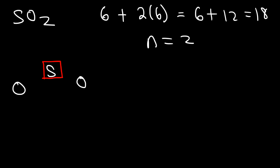I'm going to put one lone pair on sulfur. Now we need to add at least eight electrons around the sulfur atom. Some atoms may have an expanded octet and may have more than eight, but try to make the center atom have eight electrons. Right now it has two, so this is going to be four, six, and in order to get eight, one of these has to be a double bond. So now sulfur has eight electrons.